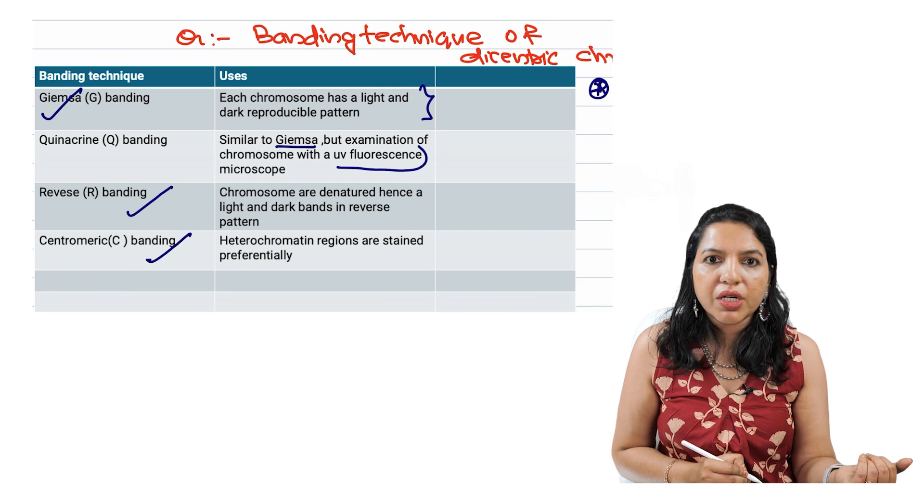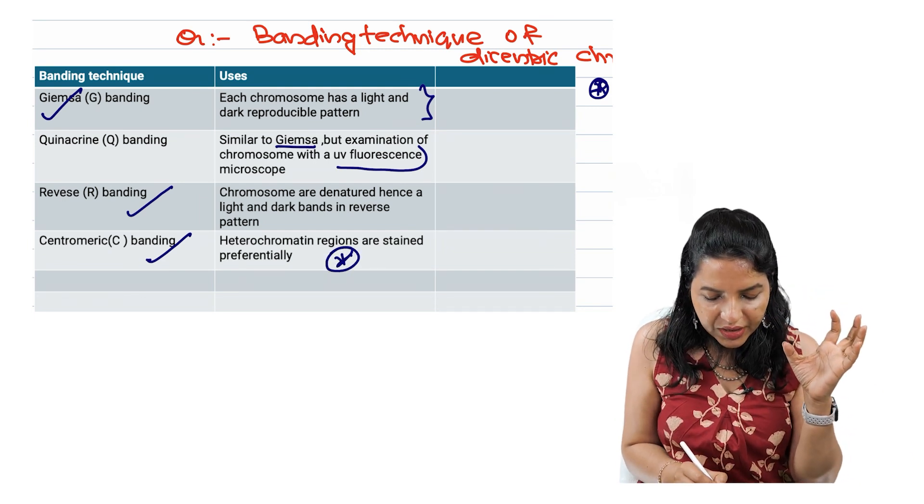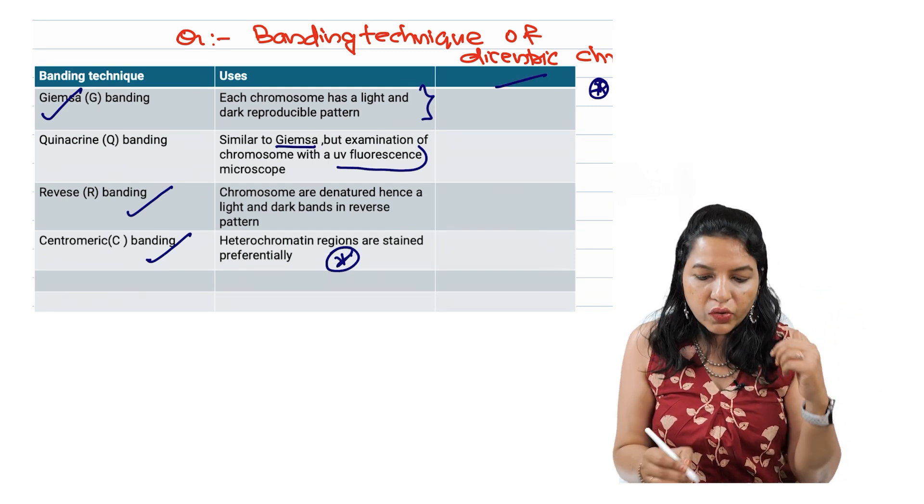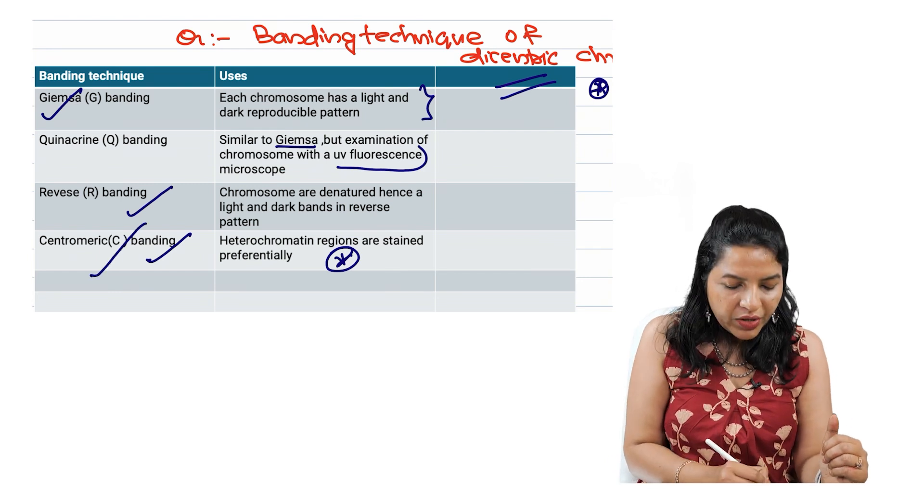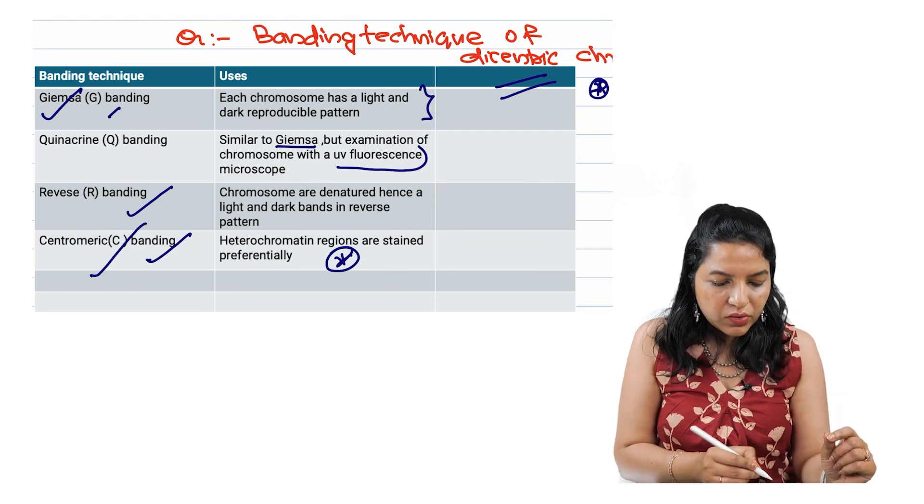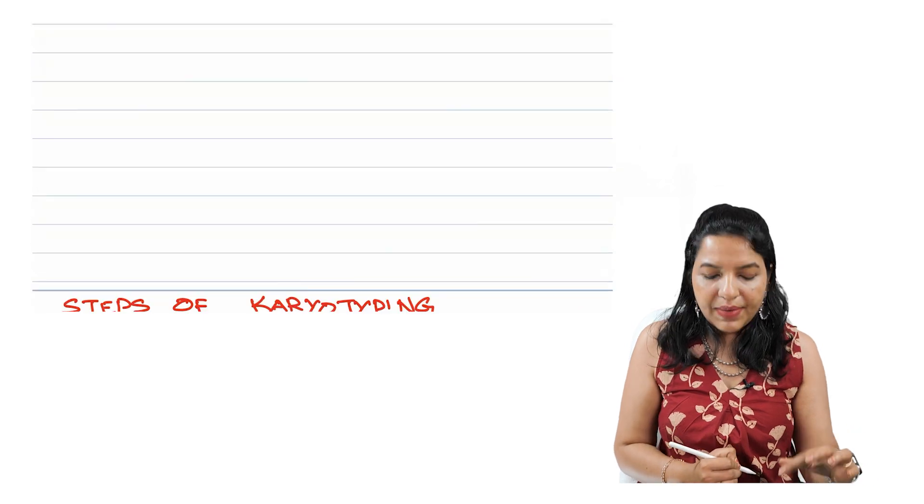Next is centromeric banding, where specifically the heterochromatin regions are stained. So in that case of dicentric chromosome, we will be using C banding. So G banding, Q banding, R banding and C banding.